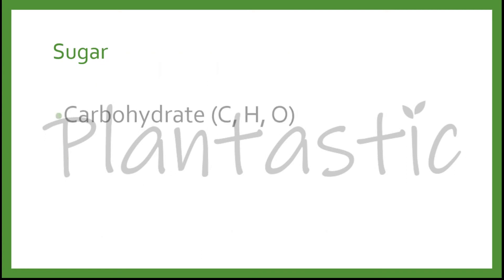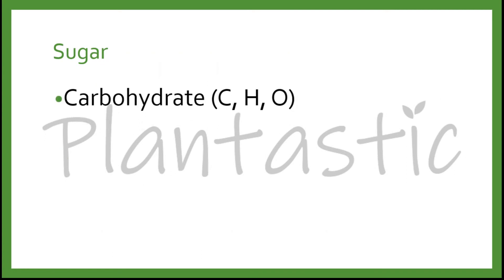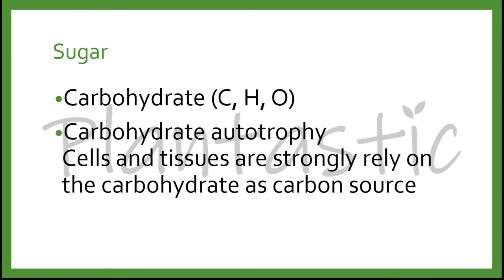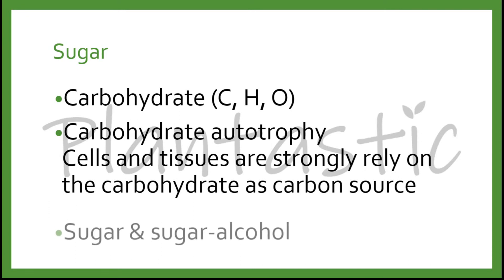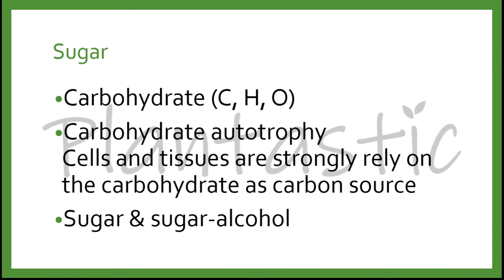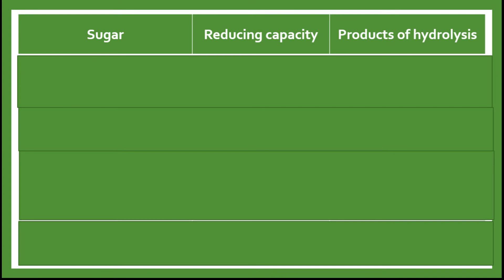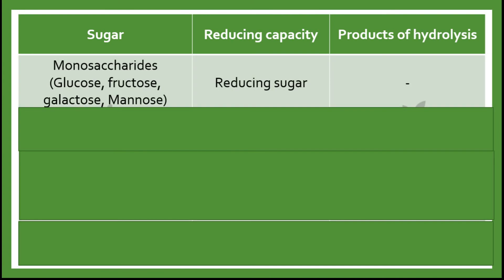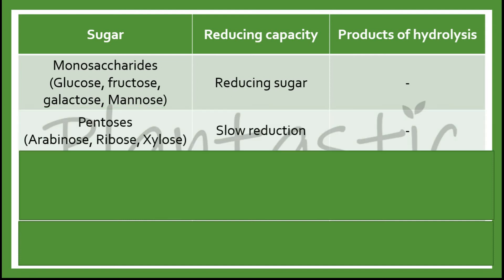Sugar is one of the carbohydrates which consists of the elements carbon, hydrogen, and oxygen. In carbohydrate heterotrophy, the cells and tissues are strongly reliant on carbohydrates as a carbon source. In plant tissue culture, sugar can be categorized into pure sugar and sugar alcohol. There are a few types of sugar: monosaccharides, for example glucose, fructose, galactose, and mannose, which are reducing sugars. Pentoses, such as arabinose, ribose, and xylose, have a slow reduction property.